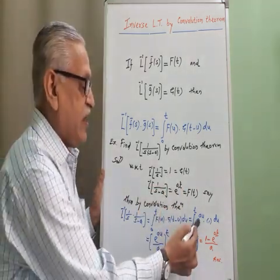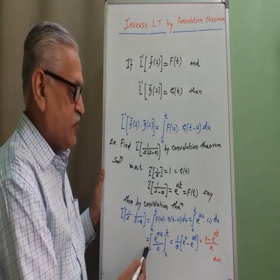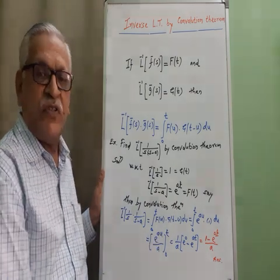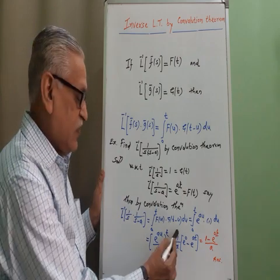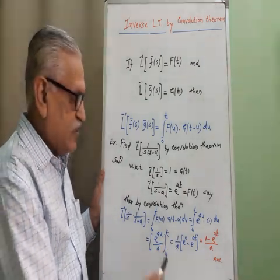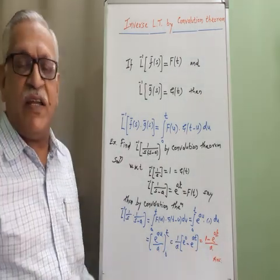Therefore its integration with respect to u is e raise to au divided by a, limits from 0 to t. 1 by a constant we take outside, plus e raise to at divided by a.